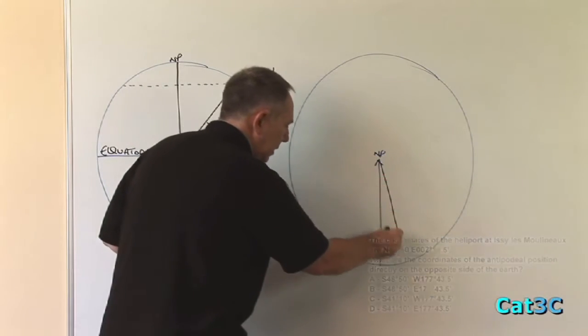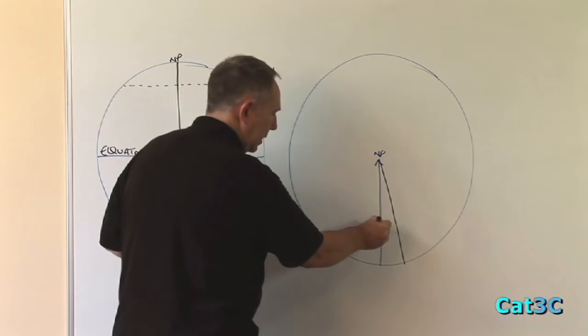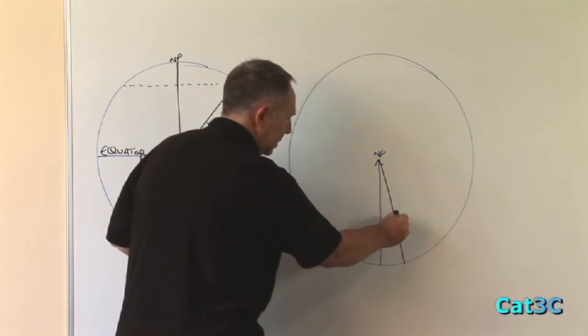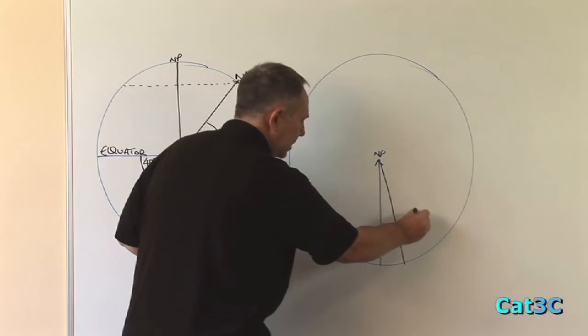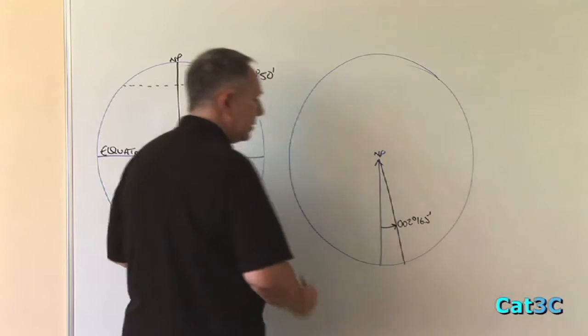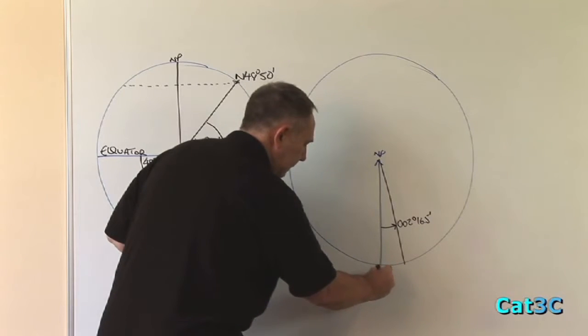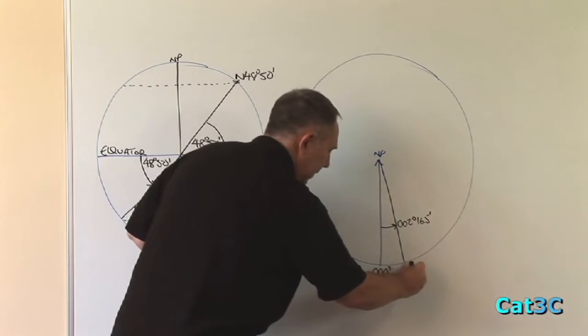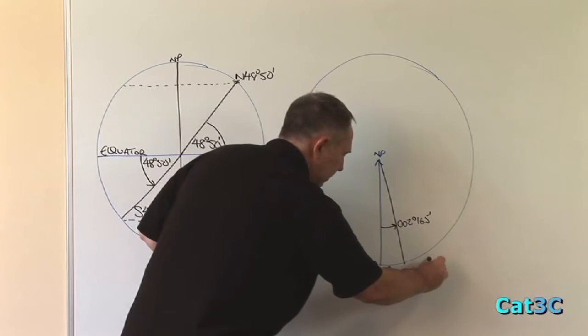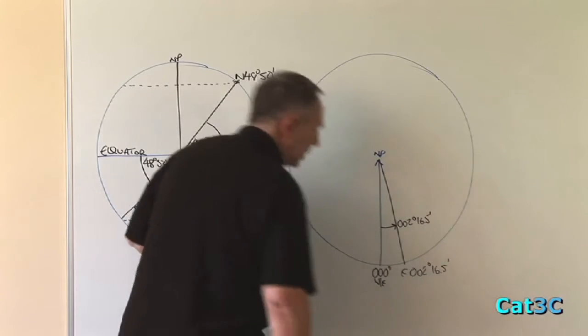That is 2 degrees 16.5 minutes to the east of the Greenwich Meridian. Making this position 2 degrees 16.5 minutes east.